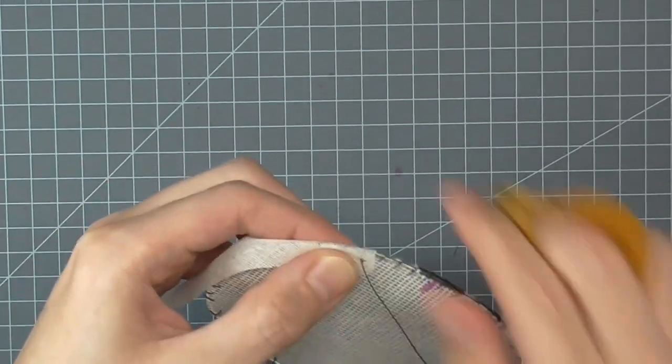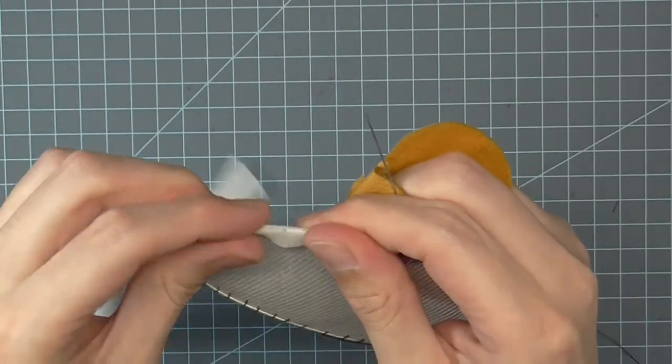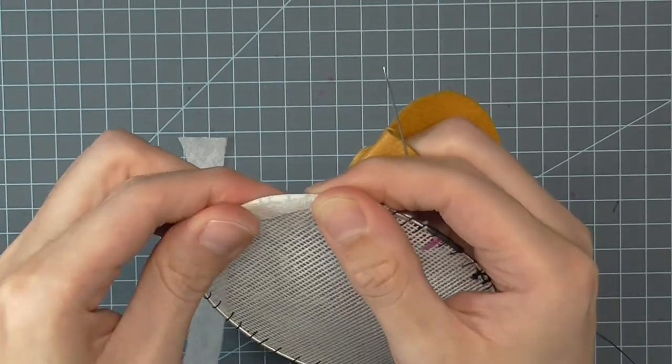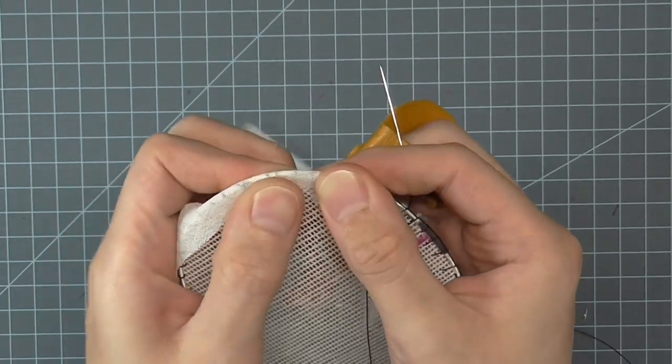As you stitch, make sure to catch all three layers. The top layer of crinoline, the buckram, and the bottom layer of crinoline.